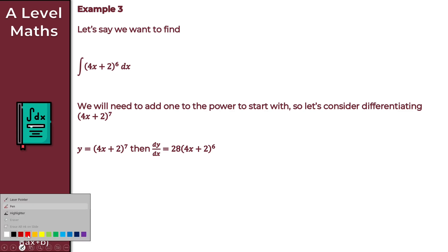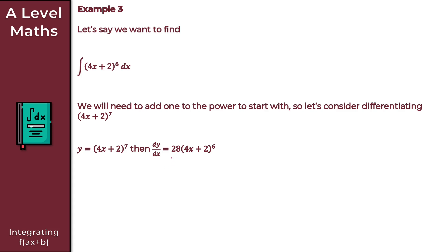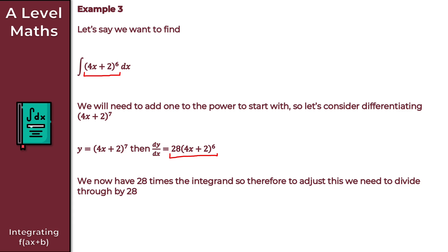We compare dy/dx to the integrand. We have 28 times (4x + 2)^6 — so basically 28 times the integrand. To adjust and give the correct result for our integral, we divide y by 28. So the integral of (4x + 2)^6 with respect to x is equal to 1/28 × (4x + 2)^7 + c, where c is our constant of integration. That gives us the solution to Example 3.